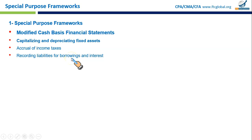Third modification: recording liabilities for borrowing and interest. This involves recognizing money borrowed and the interest owed even when payment hasn't been made yet. For example, if a business takes out a $2,000 loan and owes $100 in interest, the $100 is an expense and the $2,000 is a liability.